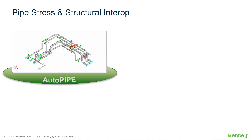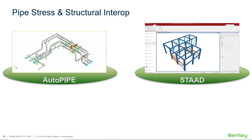As an overview, first the pipe stress analysis is done in AutoPipe by the pipe stress engineer according to pipe stress criteria. Concurrently, the structural analysis is done in STAAD Pro by the structural engineer using structural criteria.